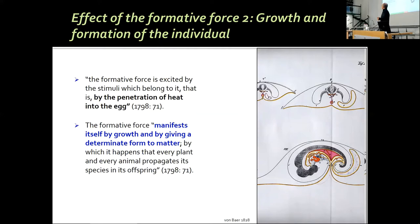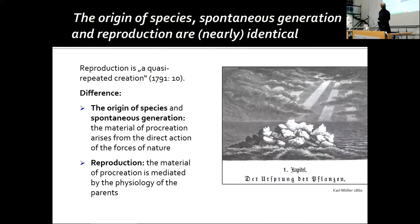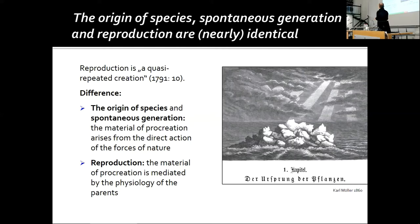The second effect is the formation of the individual — this is actually how the Bildungstrieb was originally introduced by Blumenbach. If I understand Blumenbach correctly, there is no real fundamental difference between the origin of species, spontaneous generation, and the reproduction of the individual. He writes that reproduction is a quasi-repeated creation. The only difference is that in spontaneous generation the material arises from the direct action of forces of nature, while in reproduction this material is mediated through the physiology of the parents.